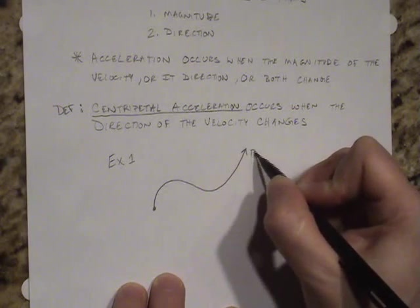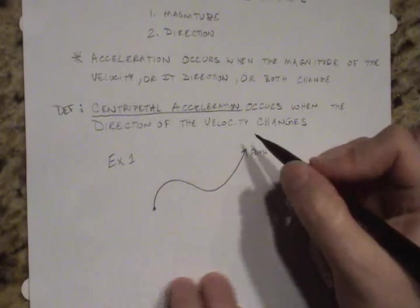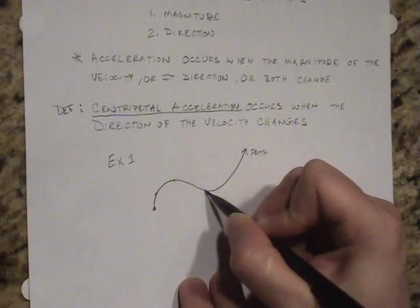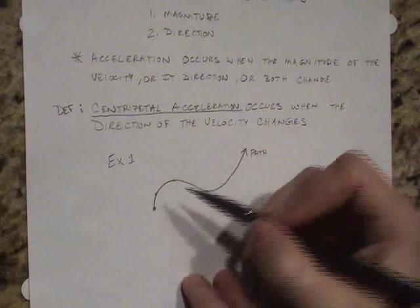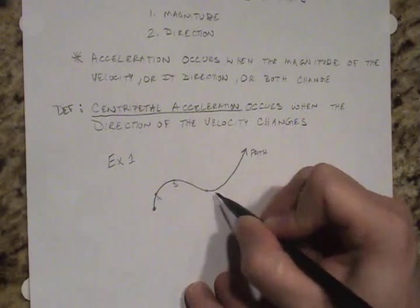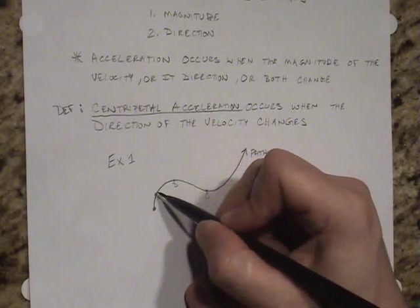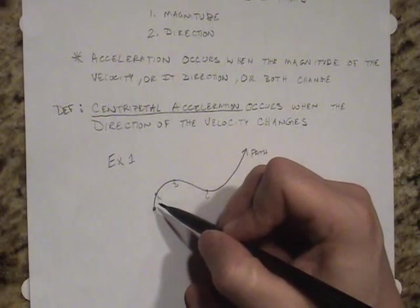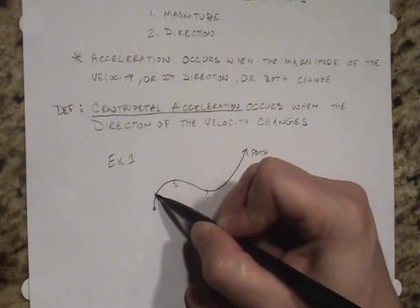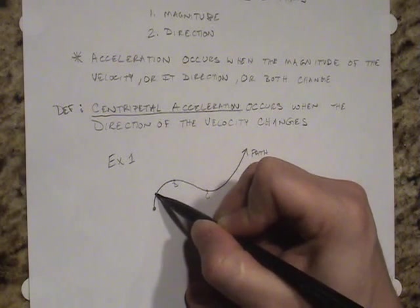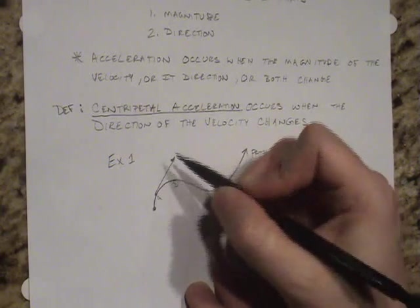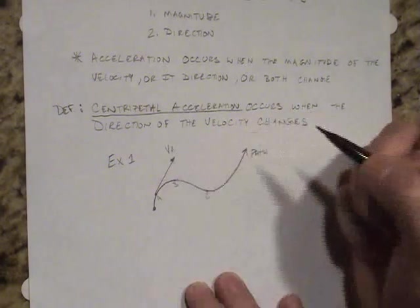Now to understand centripetal acceleration we need to look closely at what is the direction of the velocity as our path changes. So we'll draw an example path and put a nice curve to the path. This is our path and we can look at the velocity at several points.